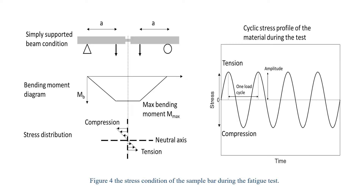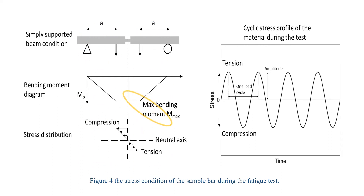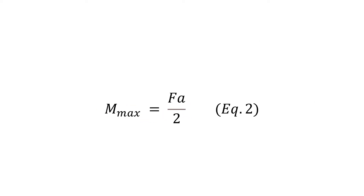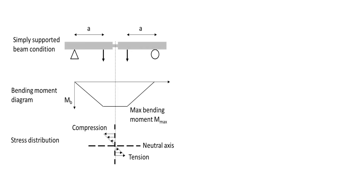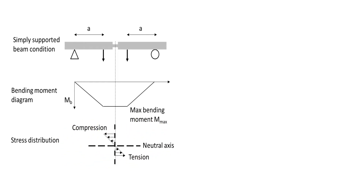In this test, the loading configuration of the sample bar is simplified as a simply supported beam with two point loads at distance A from the supports. This makes the bending moment reach its maximum at the neck region in the middle, calculated as: M = F × A / 2, where F is the load and A is the distance of the point load to the support. The bending moment causes maximum tensile stress at the bottom and maximum compressive stress at the top. The stress amplitude is calculated as: σ = M × (D/2) / I, where D is the diameter of the neck region and I is the moment of inertia.